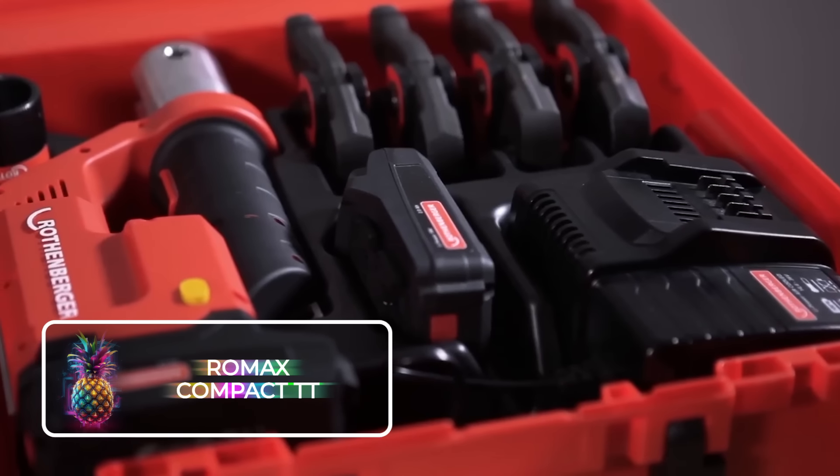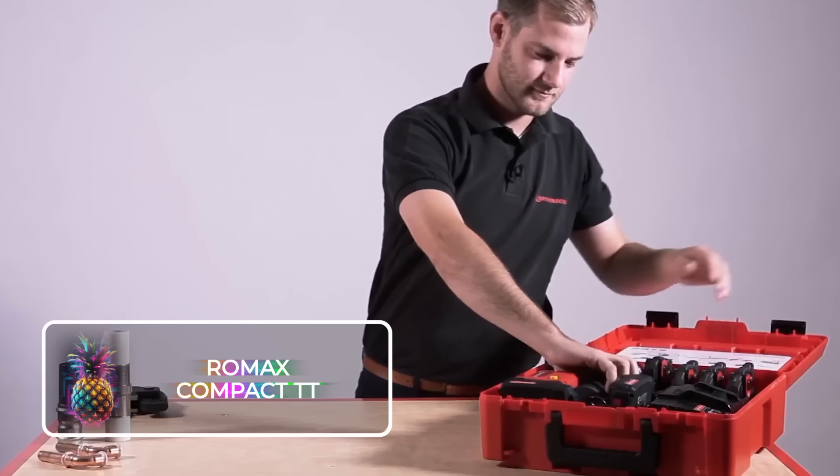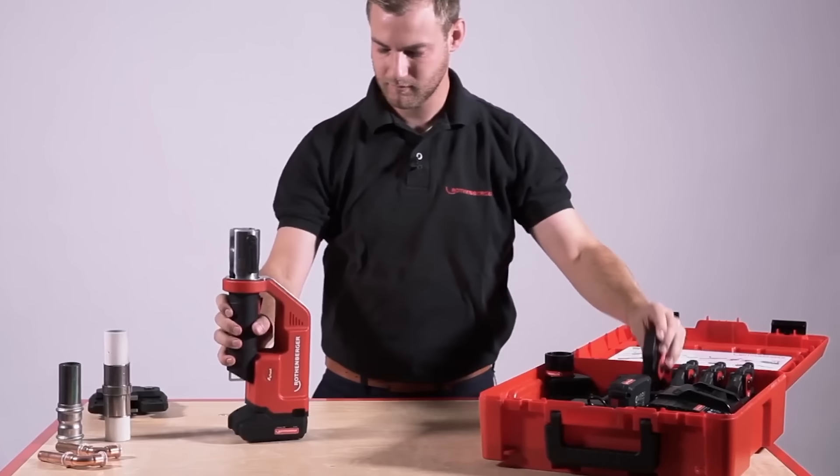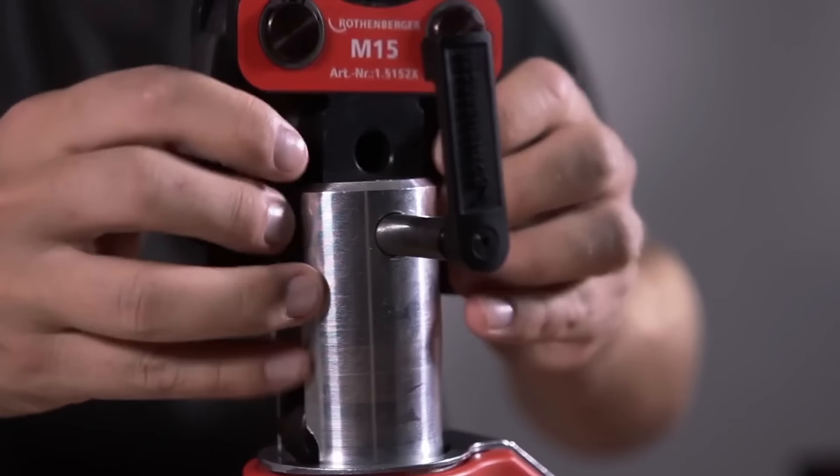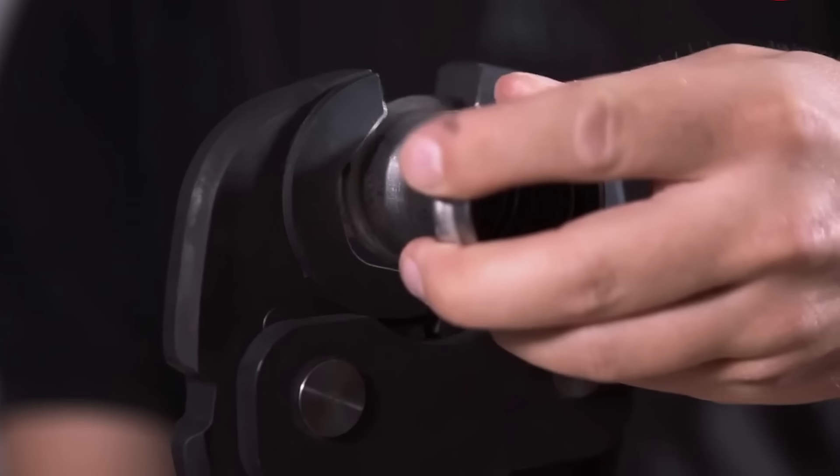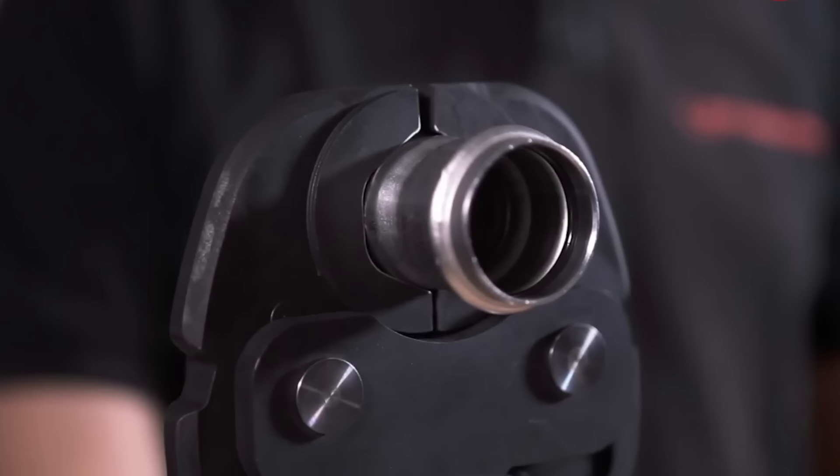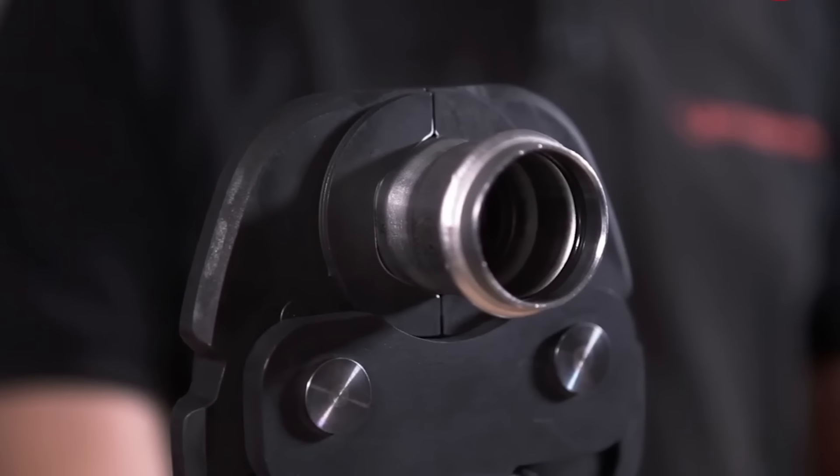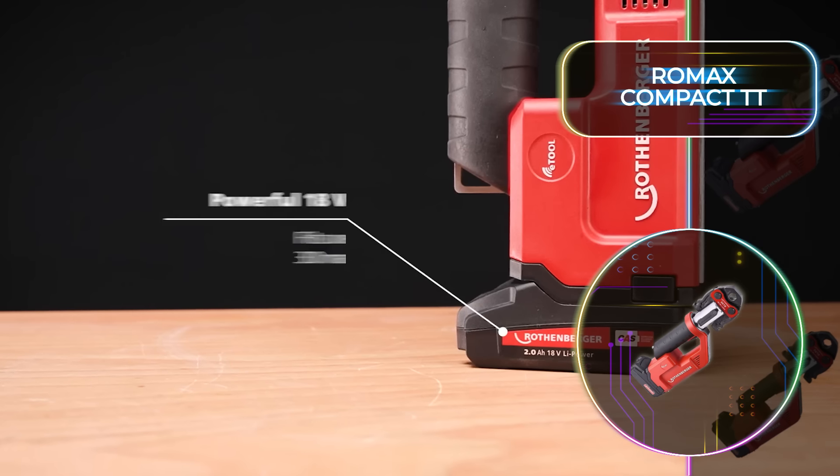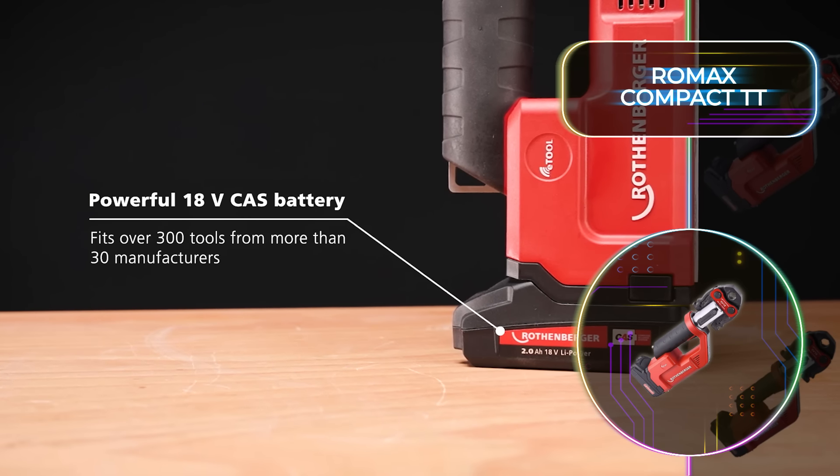Romax Compact TT. This product does not have the word compact in its name for nothing. At about the same weight as your average bowling ball, this tool contains an astounding number of advantages. It can be used to crimp virtually any kind of fitting. Its maneuverability is not its only strength, though, as the cold-resistant battery pack means you can use it in virtually any kind of weather, even in temperatures as low as 14 degrees Fahrenheit or negative 10 degrees Celsius.